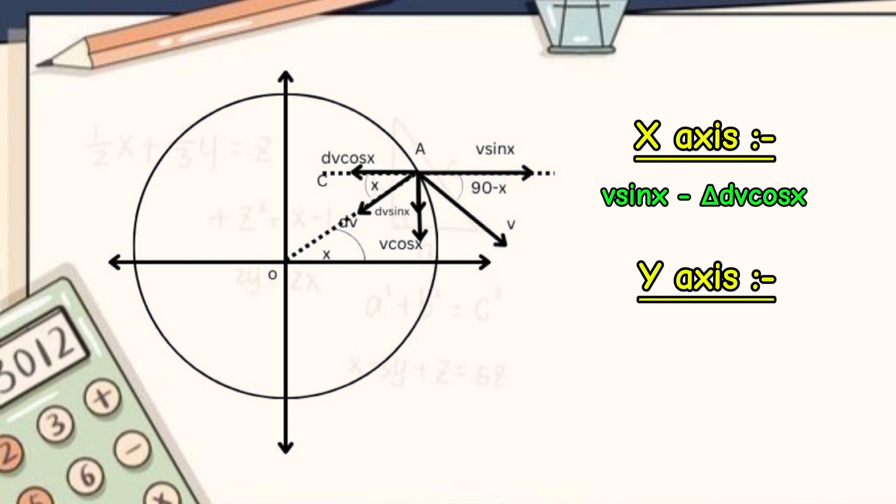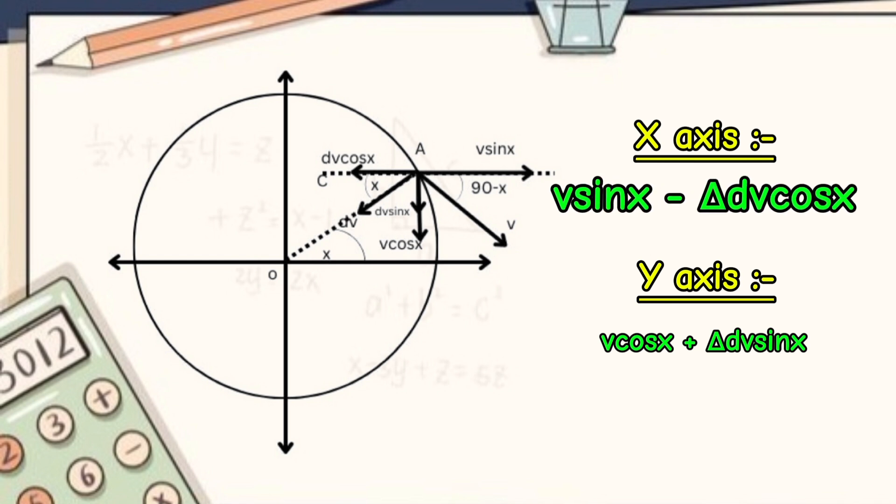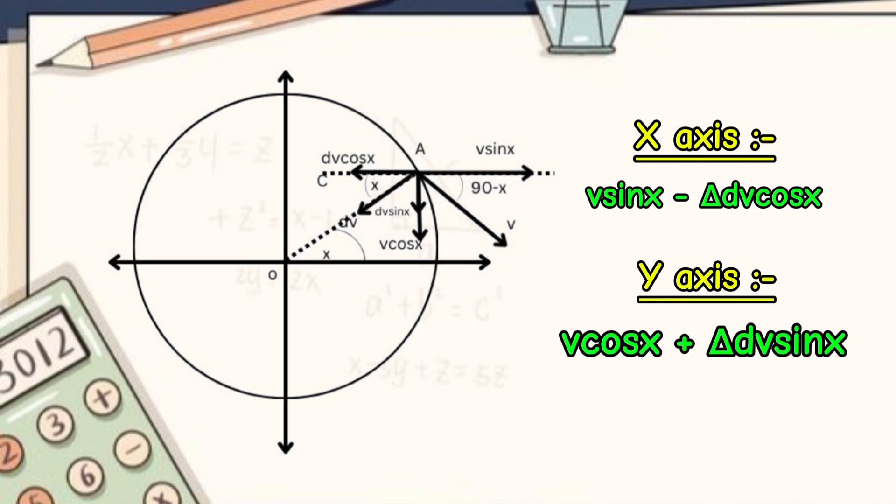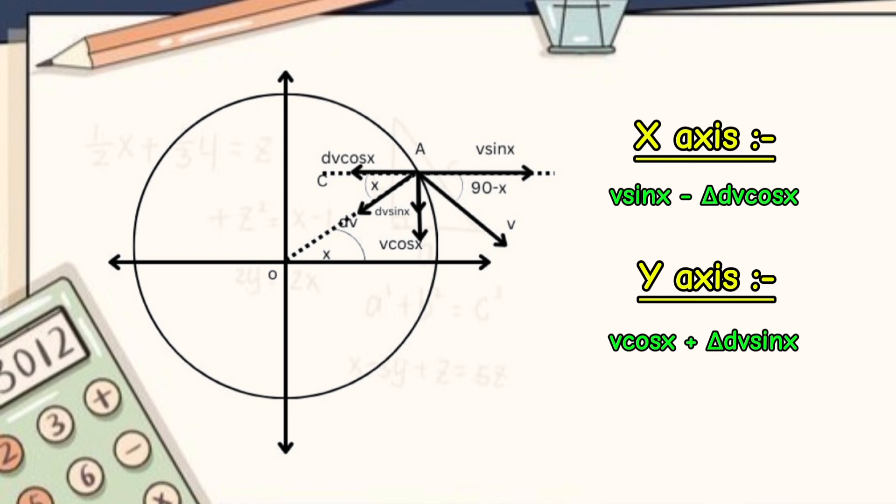While in the y direction, v cos x and delta v sin x are in same direction and gets added up. So, the net velocity vector along x-axis is v sin x minus delta v cos x. And that in the y direction is v cos x plus delta v sin x.